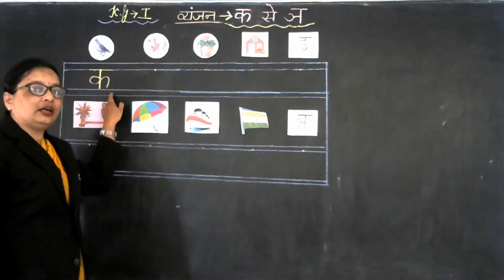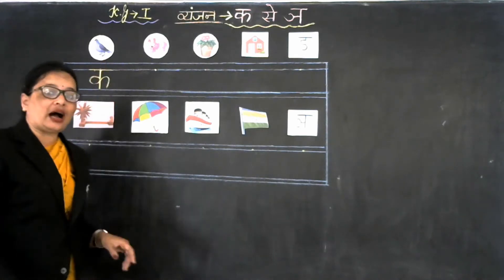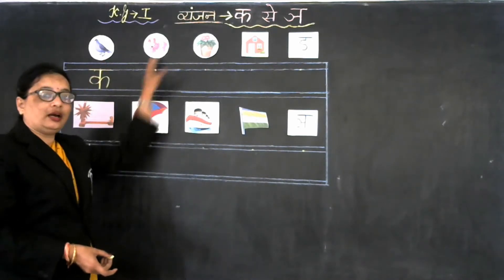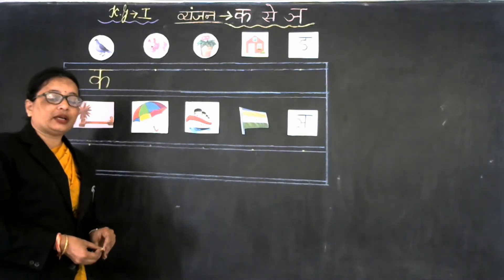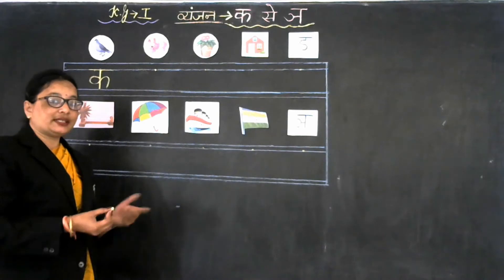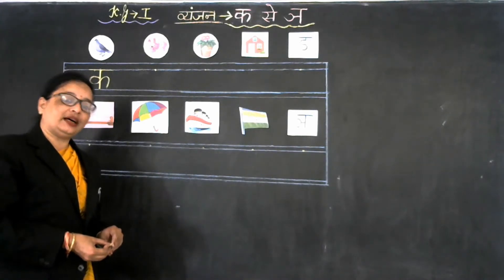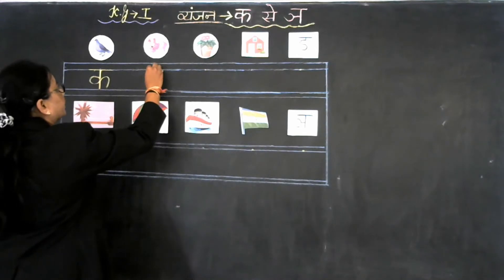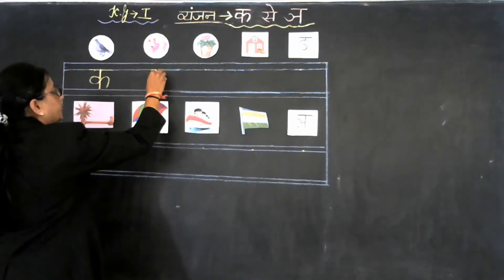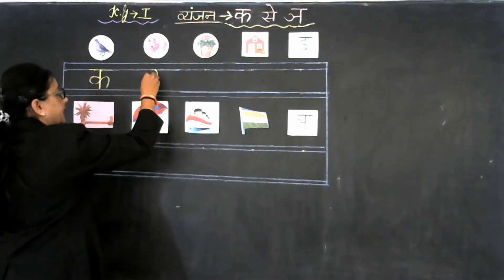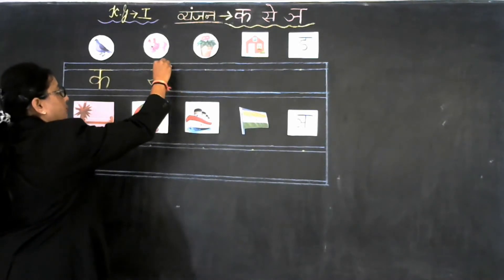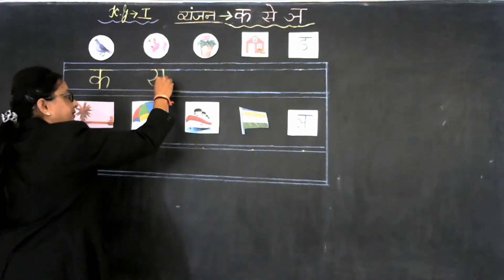Ka kamal ka. Ka kabootar ka. Now next Vyanjan is Kha. So what is the formation of Vyanjan Kha? Now look at the board. First of all we draw number two like this, then go up.